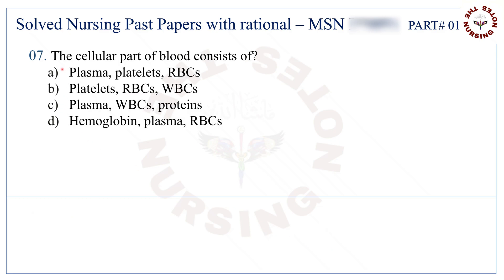Question number 7: The cellular part of blood consists of. The correct answer is B — platelets, RBCs, and WBCs.